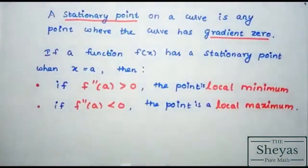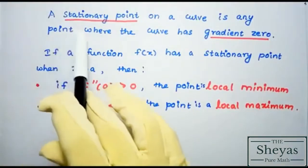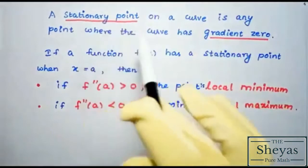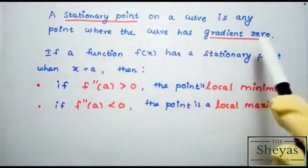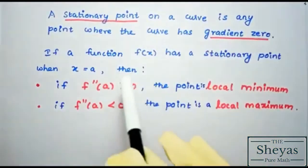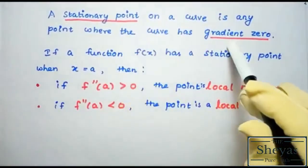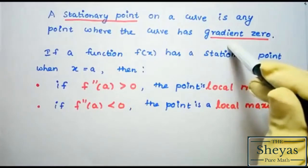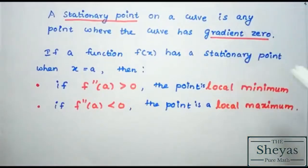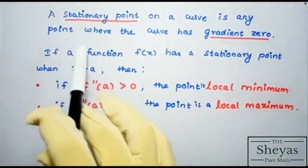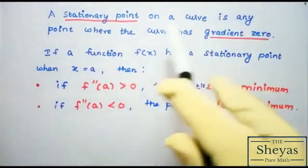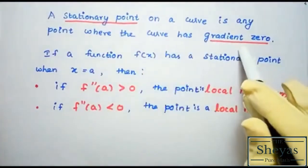Now we have to remember some points for finding local minimum and local maximum. A stationary point on a curve is any point where the curve has gradient 0. So the first derivative of a function should be 0, and that particular point you obtain is the stationary point.